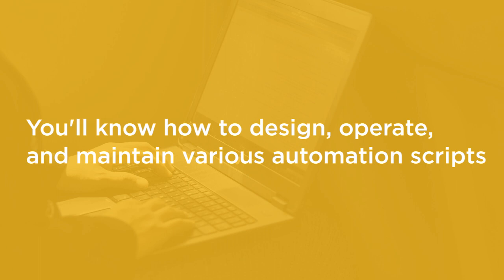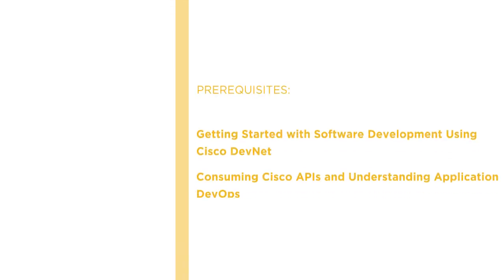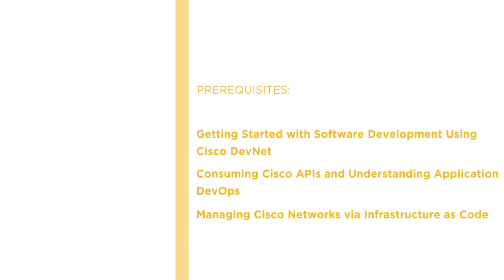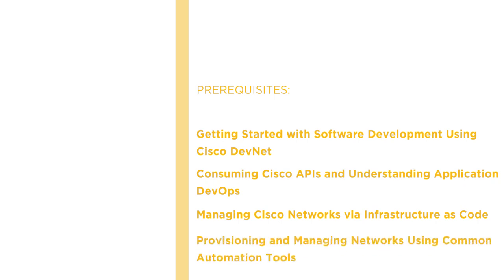Before beginning this course, I'd recommend the following prerequisite courses. These three courses provide the foundation of software development and programmability skills that are extended in this course. The content around Cisco product APIs will be especially helpful. I'm assuming you already have a strong background in Python programming. This fourth course focuses on enterprise network automation, which will provide useful context before digging into security programmability topics.